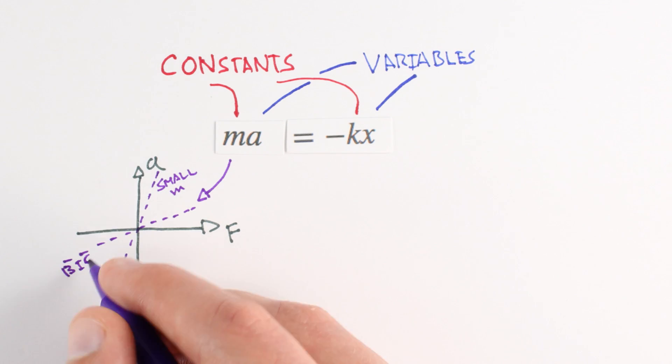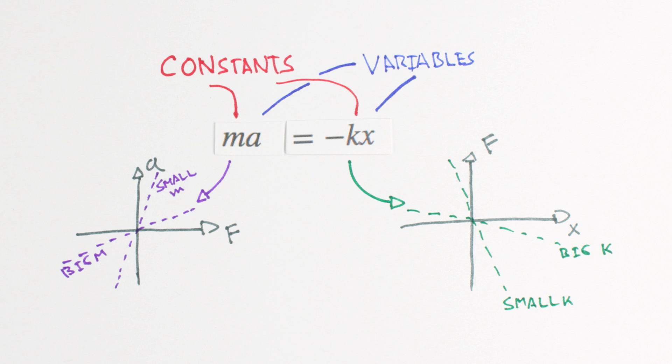m tells us how much our mass will accelerate when pushed a certain amount, and k tells us how much our spring will push back when displaced a certain amount.